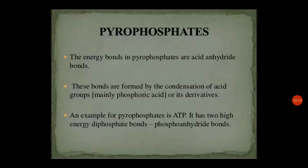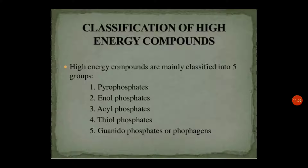The pyrophosphate is the first class of high energy compound. The high energy bond present in pyrophosphate is the acid anhydride bond, formed by the condensation of acid groups, mainly phosphoric acid and its derivatives. An example is ATP which consists of two phosphoanhydride bonds. The five classes are: pyrophosphate, enol phosphate, acyl phosphate, thiol phosphate, and guanidino phosphate or phosphagen.